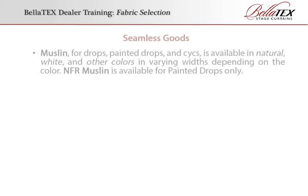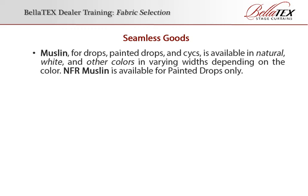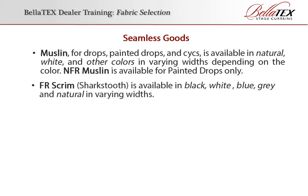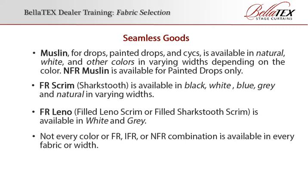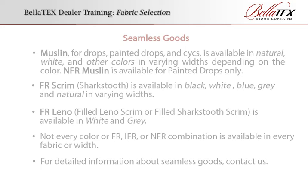Seamless goods include muslin for drops, painted drops, and scrim — available in natural, white, and other colors in varying widths depending on color. NFR Muslin is available for painted drops only. FR Scrim or Shark's Tooth is available in black, white, blue, gray, and natural in varying widths. FR Leno is available in white and gray. Not every color or FR, IFR, or NFR combination is available in every fabric or width. For detailed information about seamless goods, contact us.